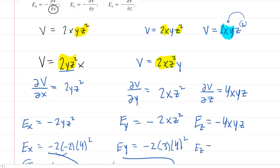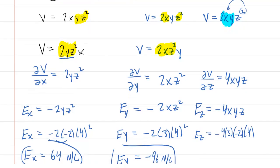And so now we just plug in the x, y, and z coordinates. x was 3, y was negative 2, and z was 4. So now we have negative 4 times 3 times negative 2 times 4 gives us positive 96 newtons per coulomb.